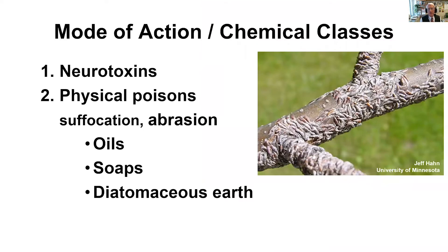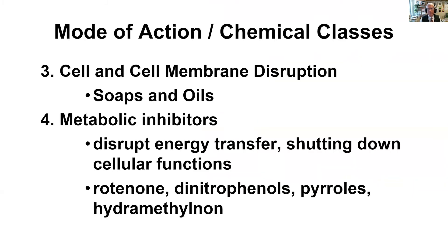In addition to the nerve poisons, there are also physical poisons like soaps and oils and diatomaceous earth, which control insects either by suffocation or abrasion. We also have insecticides that disrupt the action of the cell or the cell membrane — that would be our soaps and oils again. We also have metabolic chemicals that disrupt things like energy transfer; they could shut down cellular functions, and those would be some of the familiar insecticides we are using currently, and some of the older ones like rotenone.